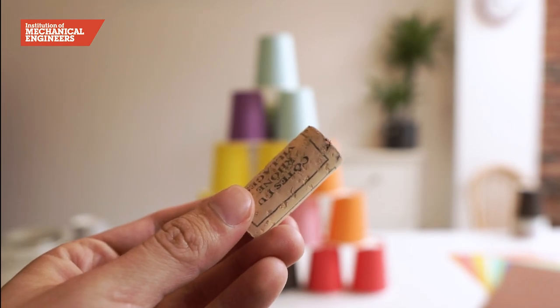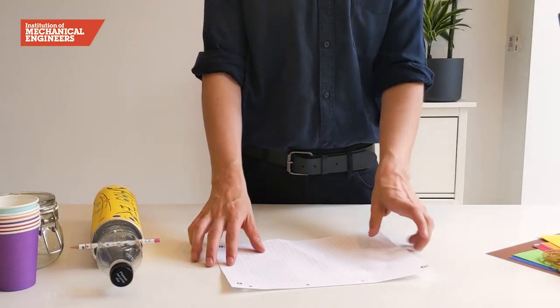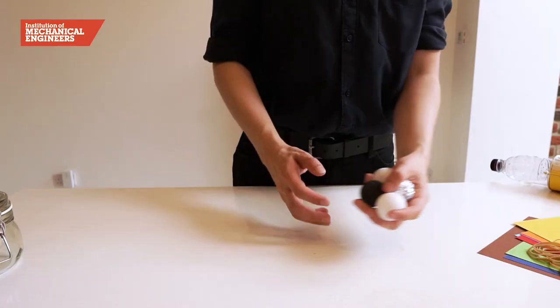Here, we're using a cork as our projectile. But the launcher can fire all kinds of different things, like ping pong balls, paper or foil.